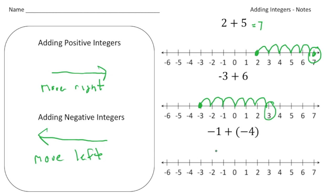And for this one, we're at negative 1 and we're adding negative 4. So we're going to go four spots to the left. So one, two, three, and four. And we end up at negative 5.